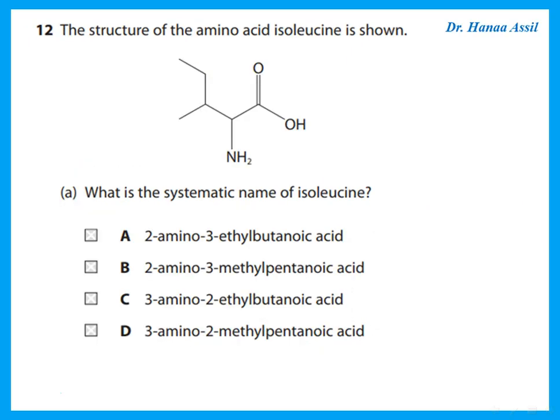The structure of the amino acid isoleucine is shown. To determine the systematic name, find the longest chain starting from the acid group — this is 5 carbons, so we have pentanoic acid. There is an amine group on carbon 2 and a methyl group on carbon 3. Substituents are arranged alphabetically, so the name is 2-amino-3-methylpentanoic acid.